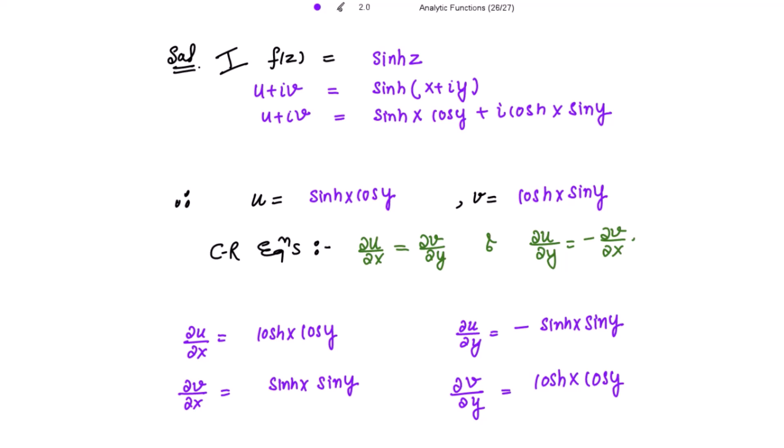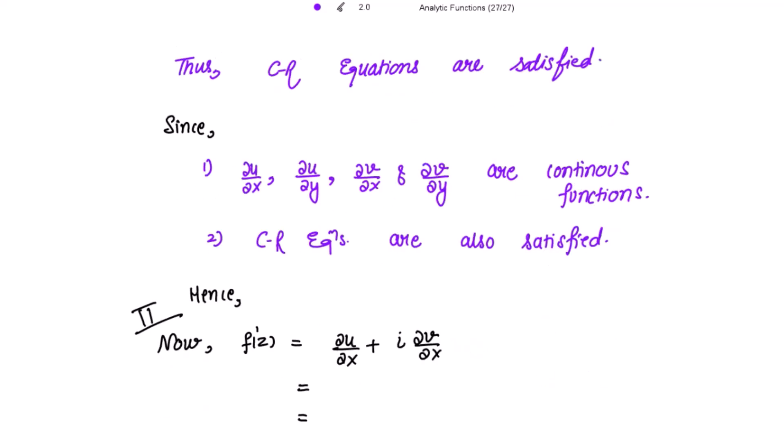Both conditions for the function to be analytic are now met: first, the partial derivatives are continuous because they are expressed in terms of sine and cosine functions which are always continuous; and second, the CR equations are satisfied. Hence the function is analytic everywhere.